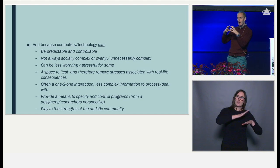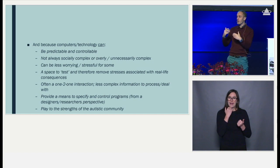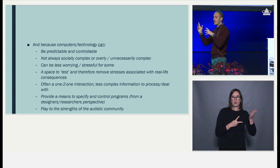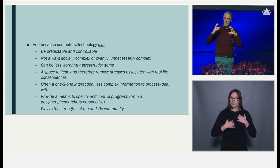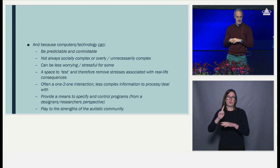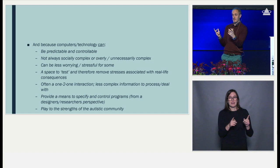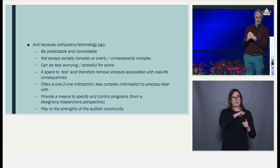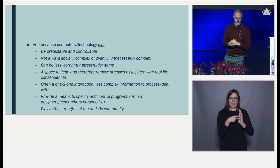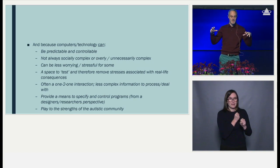Computers and technology are being used with these populations primarily because they're predictable and controllable, which speaks to autistic individuals. They're not always socially complex — they're simplified versions of the real world. They can be less worrying and stressful, and we've seen that with some of the VR work — the idea that you can visit somewhere virtually before going there in the real world, helping reduce cognitive pressure and worry. They can be a place to test different situations without real-world consequences, and they often involve one-to-one interaction, enabling people to process things in their own time.